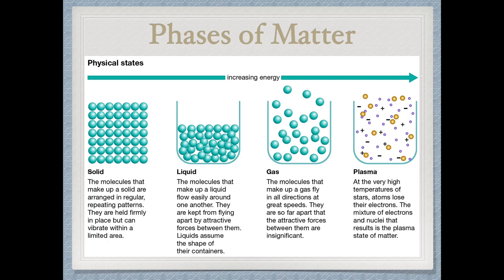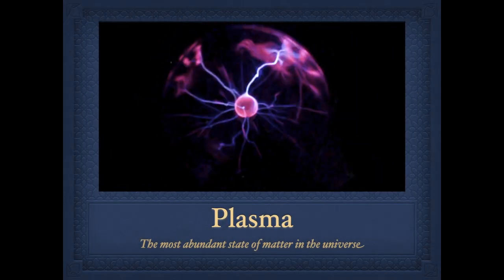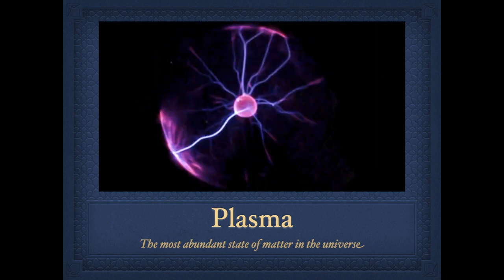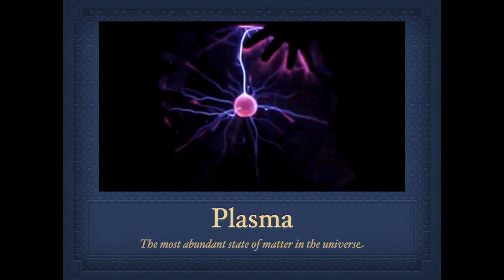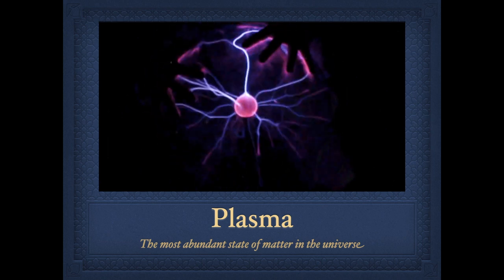Don't confuse this with the plasma in your blood — that's a completely different thing. If this kind of plasma was in your blood, you would not be here. Plasma in physics means free electrons flying around — that's what's in stars. Lightning is also a form of plasma when it shoots through the sky. Even a plasma ball, if you've seen one of those — you touch it and the electricity follows your finger — that's plasma too.